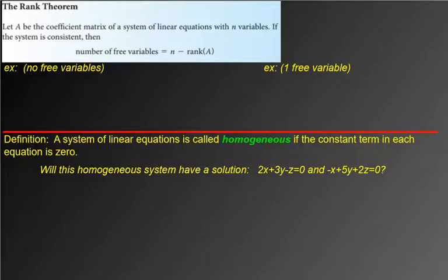So the rank theorem, this is a big one. So the theorem says, let A be a coefficient matrix of a system of linear equations with N variables. If the system is consistent, then the number of free variables equals N minus the rank of that matrix.